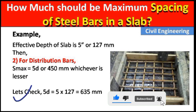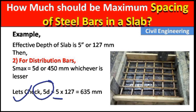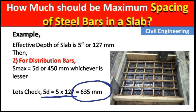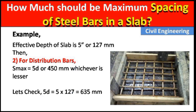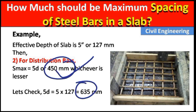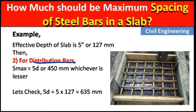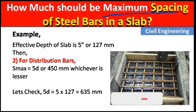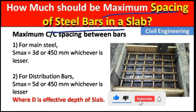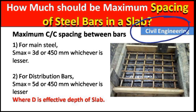So 5d = 5 × 127 mm = 635 mm. Comparing this calculated value with 450 mm, 450 mm is lesser. So the maximum spacing for distribution bars will be 450 mm. In this way, we can calculate the maximum spacing of steel bars in a slab. Please like this video and subscribe to the channel for new updates about civil engineering. Thank you.